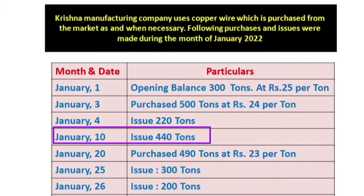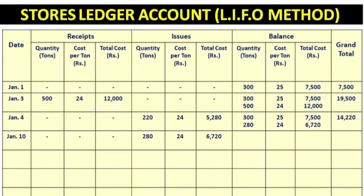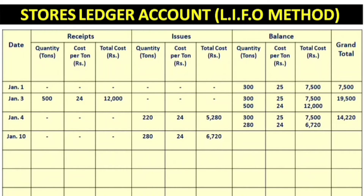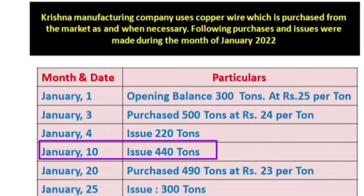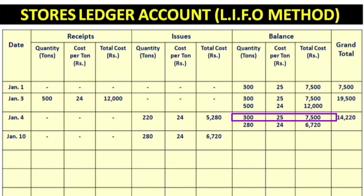For January 10th, we issue 440 tons. Using the LIFO method, we go to the last received stock first. The latest stock available is 280 tons at Rs.24. We take all 280 tons, but we still need 160 more tons. So we go to the previous stock — 300 tons at Rs.25 — and take 160 tons from there, leaving a balance of 140 tons at Rs.25.